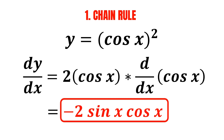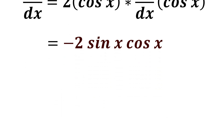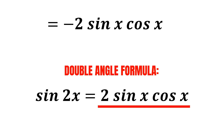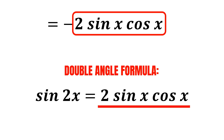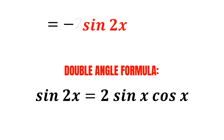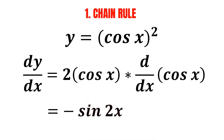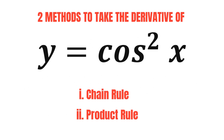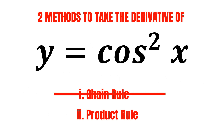However, this expression can actually be further simplified by using trigonometric identities. According to one of the double angle formulas, sine of 2x is the same as 2 sine x multiplied by cosine x. Since our expression contains 2 sine x multiplied by cosine x, we can replace it with sine 2x. And we've got our final answer — that's how we find the derivative of cosine squared x by using the chain rule.